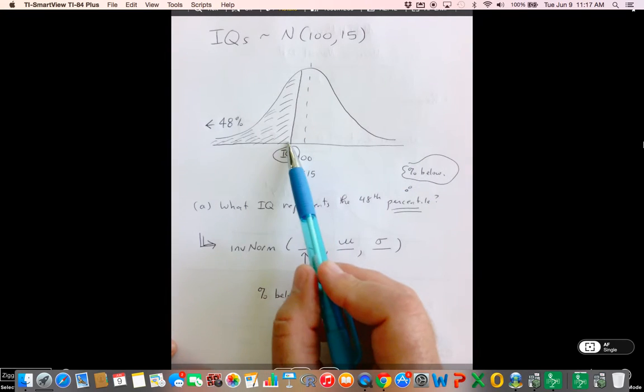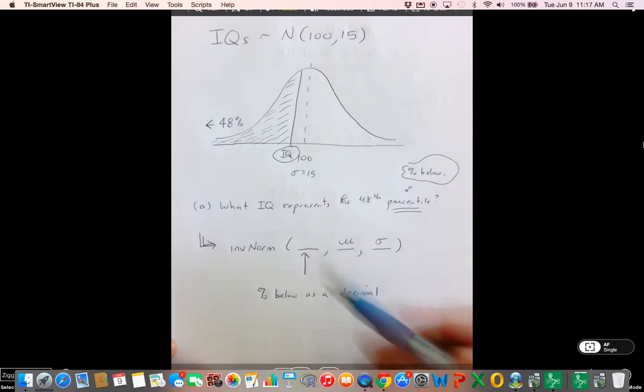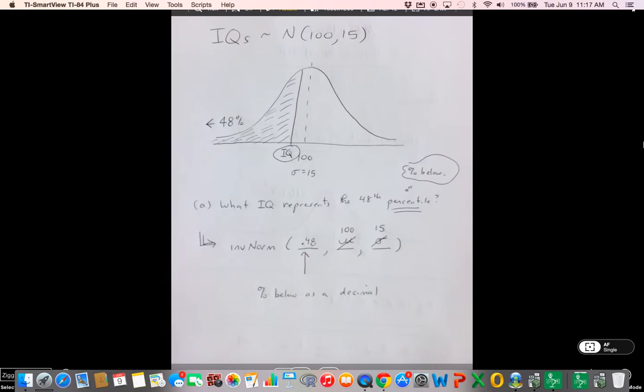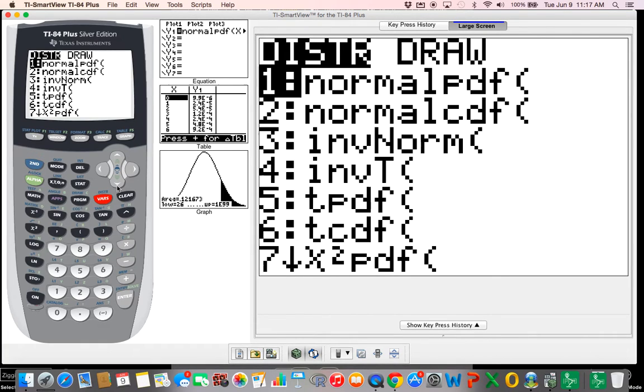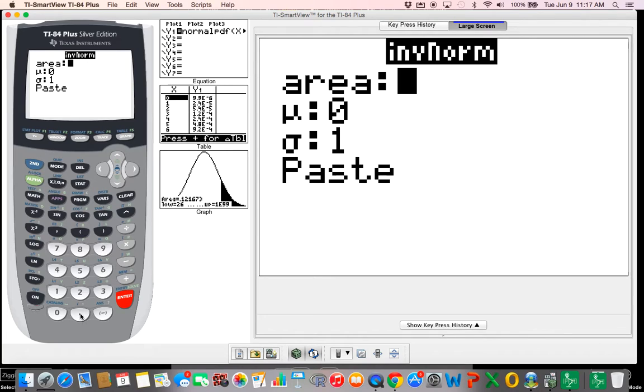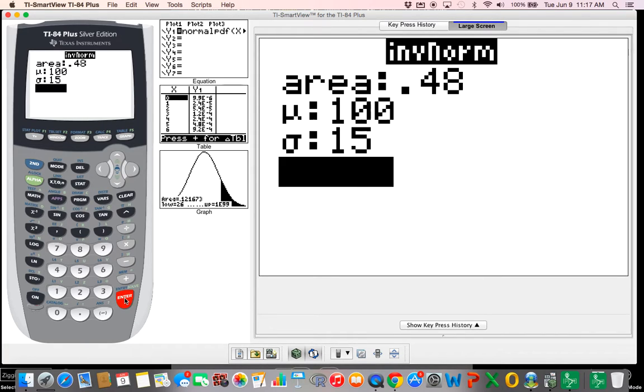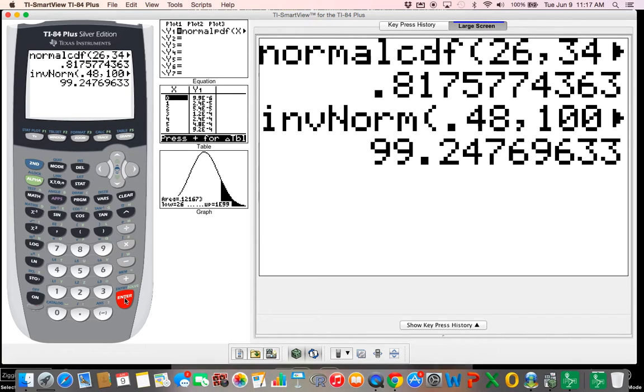Percent below as a decimal. Now, for this problem up here, what do we want? Well, we want 48 percent below, and we know 48 percent as a decimal is 0.48. We know the mean of IQs, which we're dealing with here, is 100, and we know the standard deviation is equal to 15. So, gang, what we can do here is we can just go to second function distribution, come down to number three instead of number two that we've used previously for the inverse norm. We want our area to be 0.48, we want our mean to be 100, and we want our standard deviation to be 15. Come to paste, hit enter, hit enter again. So, gang, the IQ that is at the 48th percentile is a 99, or if you round up and call it, let's say, 100.